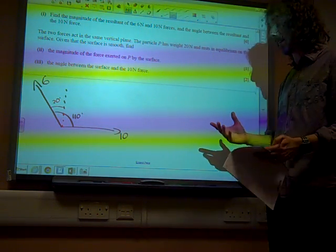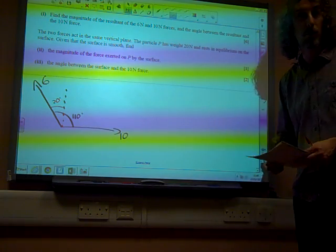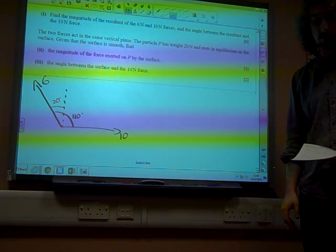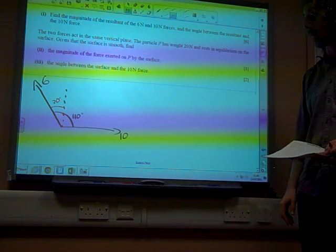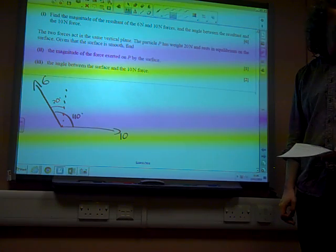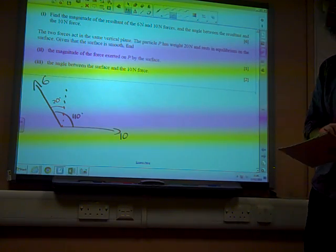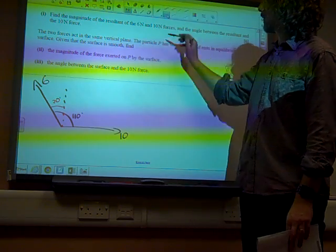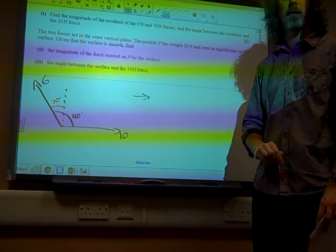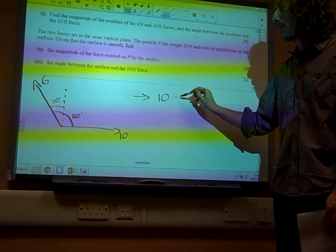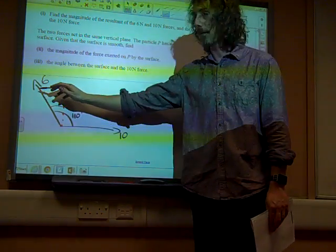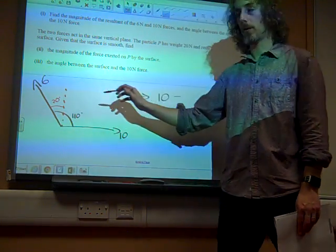So, if all I'm interested in is those two forces, let's strip away everything else that gets in the way in this question and think about those two forces. So, in a horizontal direction, if I want to find the resultant of those two forces, it would be 10 minus 6 sine 20, because it's that component of it.